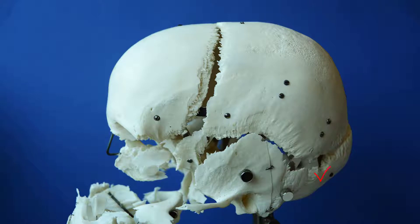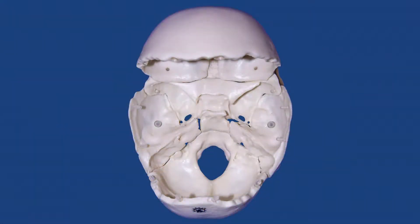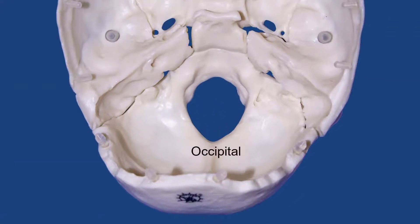Now we come to the occipital bone, which in this disarticulated skull is going to be the bone that you find at the back of the head. If you take off the parietal bone from the top of the cranium and look into the skull, you can see the interior of the floor of the cranium, and here you find the occipital bone.